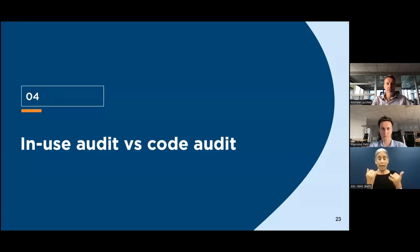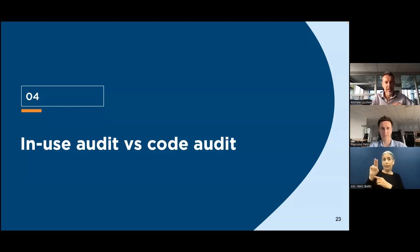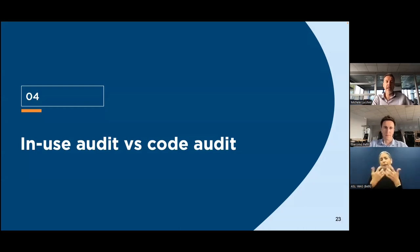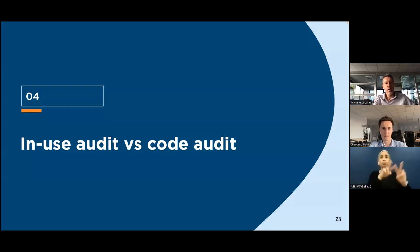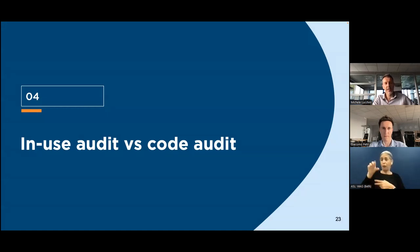Now we want to spend some time focusing on the difference between an in-use audit — an audit originated by using a digital property, such as browsing a website with a variety of assistive technologies — versus an audit that also includes a validation of the code: the HTML, CSS, and JavaScript code, which are big drivers of the final accessibility and conformance of a website.